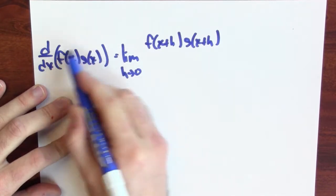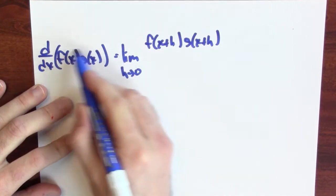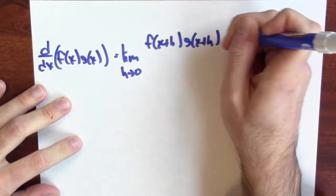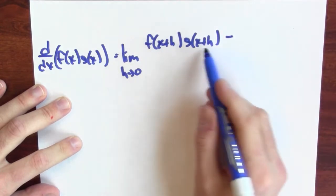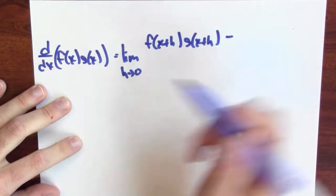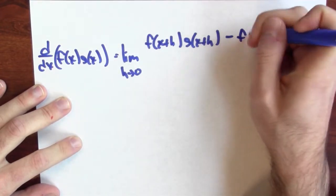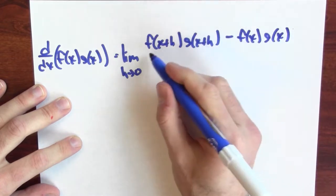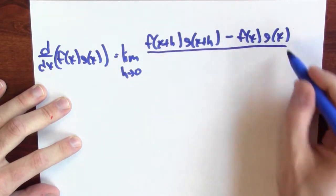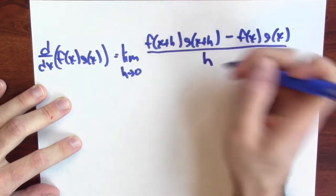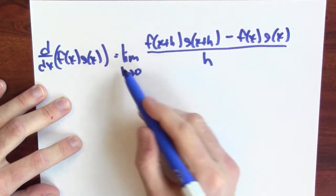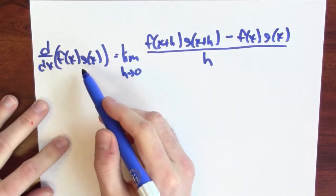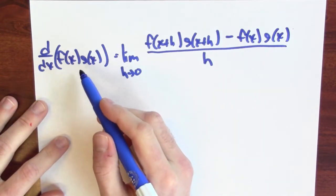I'm thinking of f·g as the function, so I'm plugging in x plus h. I subtract the function evaluated at x, which is f(x)·g(x), and divide by h. It's this limit of this difference quotient that gives me the derivative of the product.